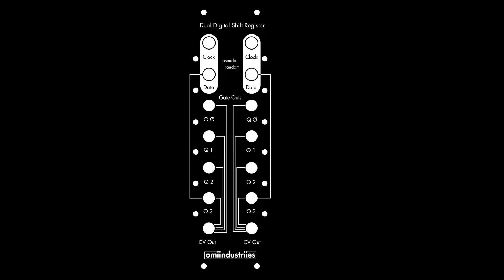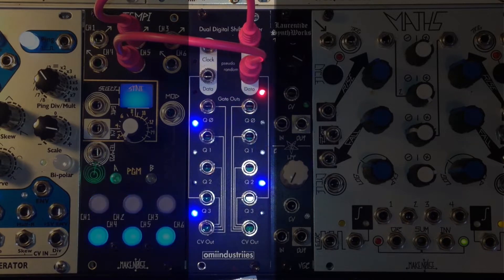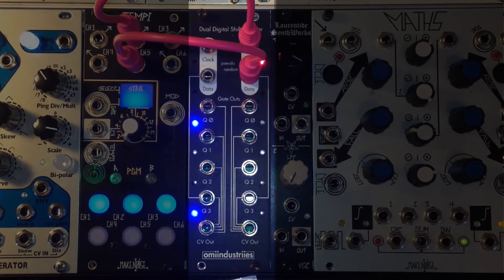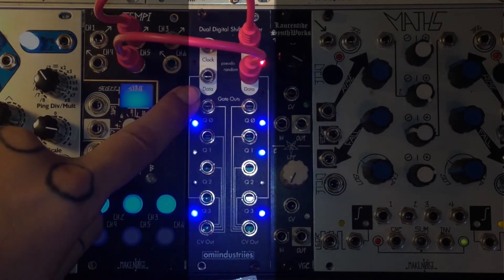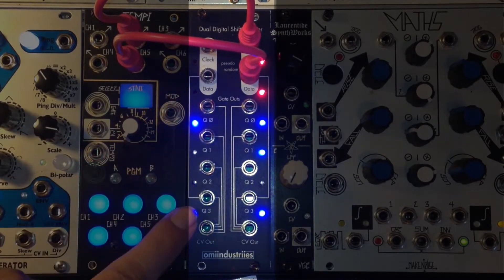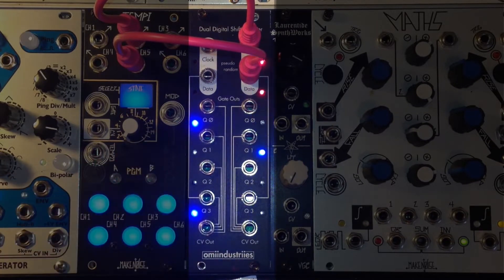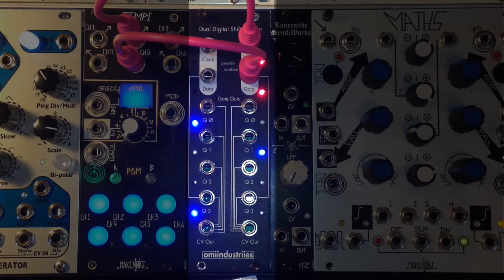The Dual Digital Shift Register is an aleatoric sequence generator based around shift registers. It offers a unique take on sequence generation, using gate signals to create pseudo-random chance operations. The DDSR has two channels, both of which have two gate inputs labeled clock and data, and five outputs: four gate outputs arranged vertically and indicated by the blue LEDs, and a CV output. The state of the four gates determines the CV output. It creates patterns based on the relationship between the clock and data inputs. It is a compact and versatile source of modulation.